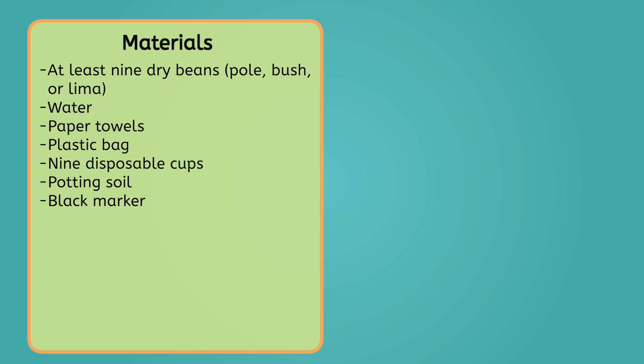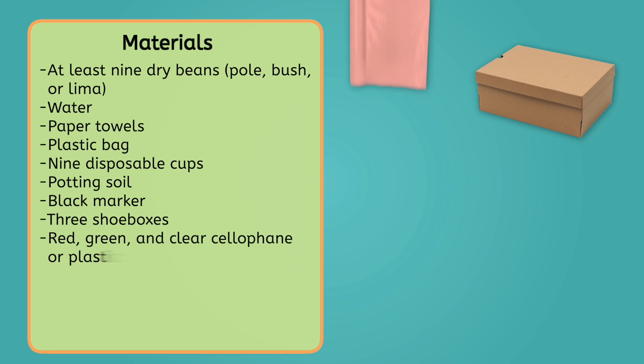To control the color of light each plant receives, we'll grow them in boxes covered in colored cellophane. For this, you'll need 3 shoeboxes or cardboard boxes of similar sizes, red, green, and clear cellophane or plastic wrap, scissors, and tape.